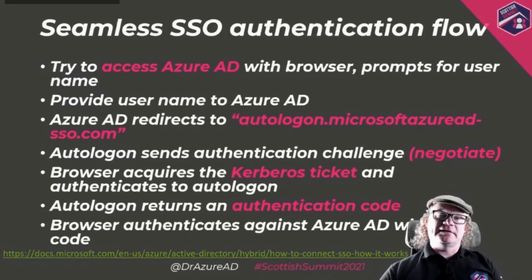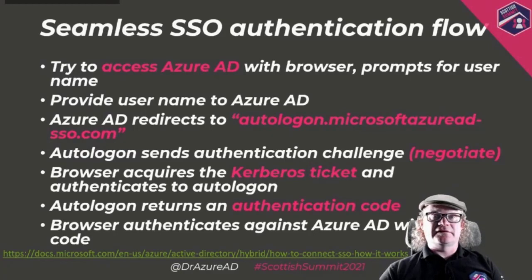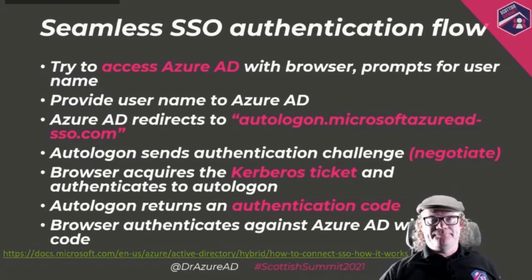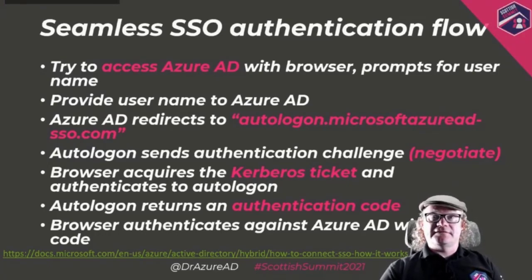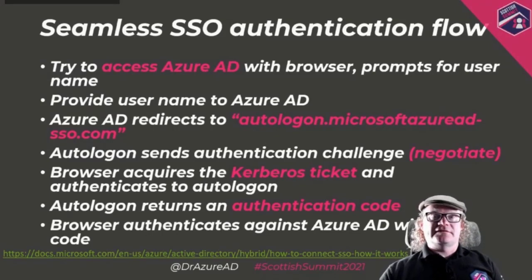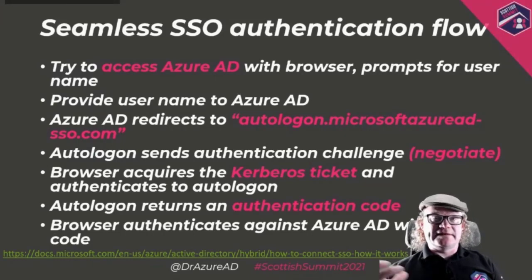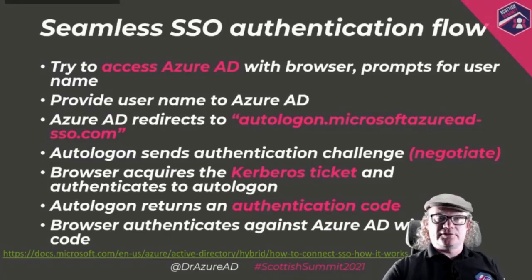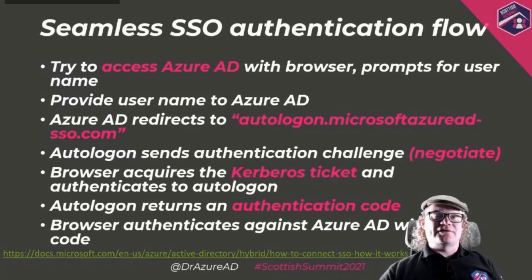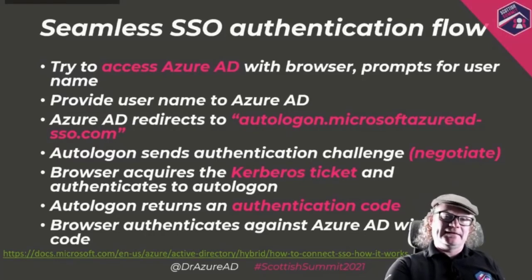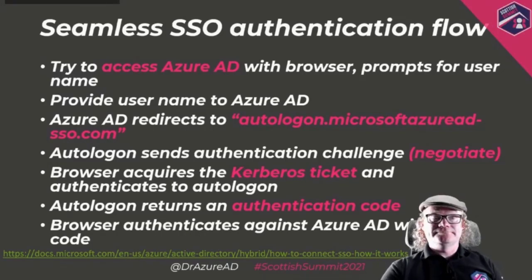Here's how this works for browsers. The user enters their username in Azure AD, which detects the organization uses Seamless SSO and redirects the browser to 'autologon.microsoft.azuread-sso.com.' Autologon sends a negotiation challenge, the browser goes to the domain controller and requests a ticket, gets it, goes back to Autologon which returns an authentication code, and the browser then goes back to Azure AD with that code and is logged in.